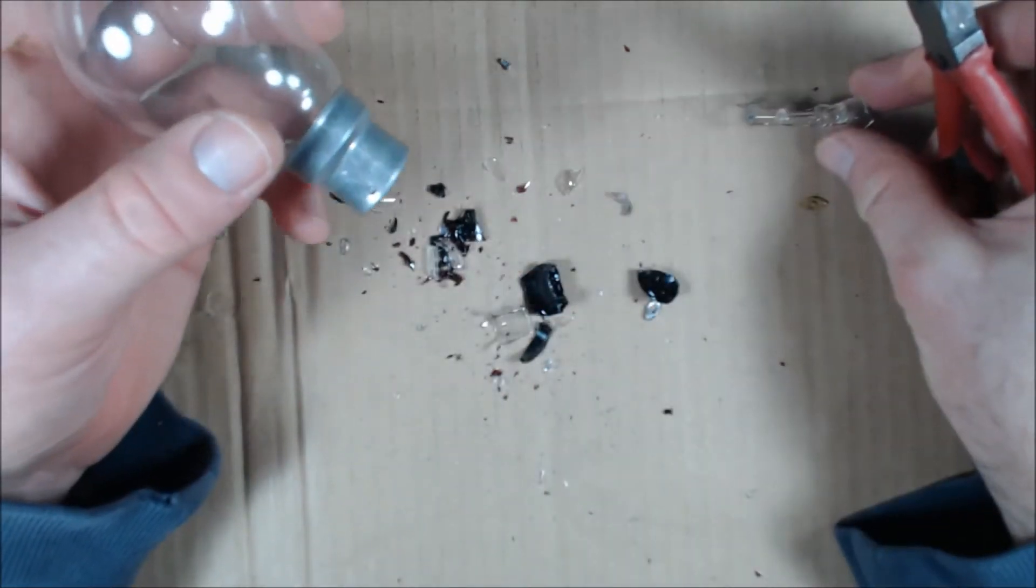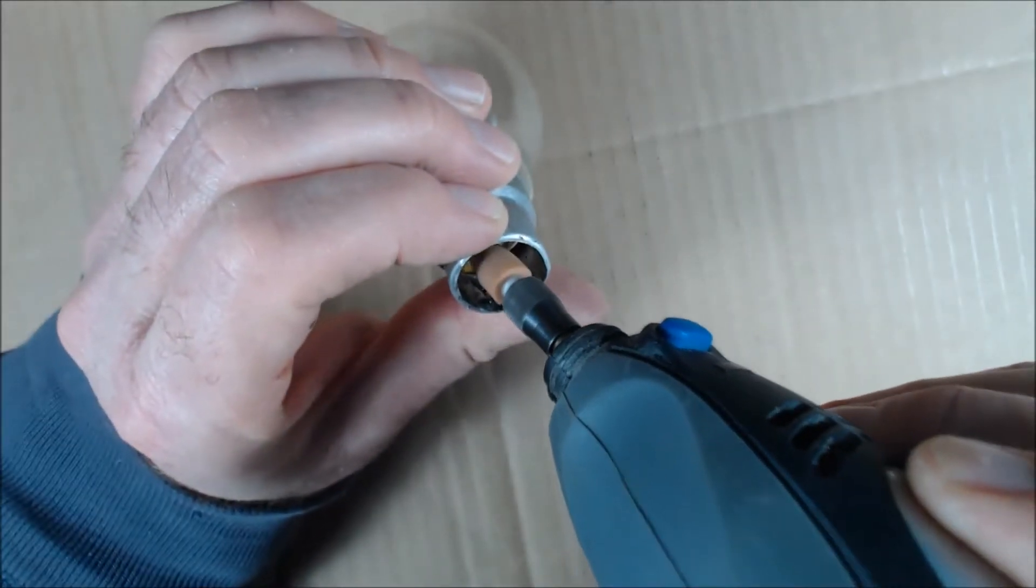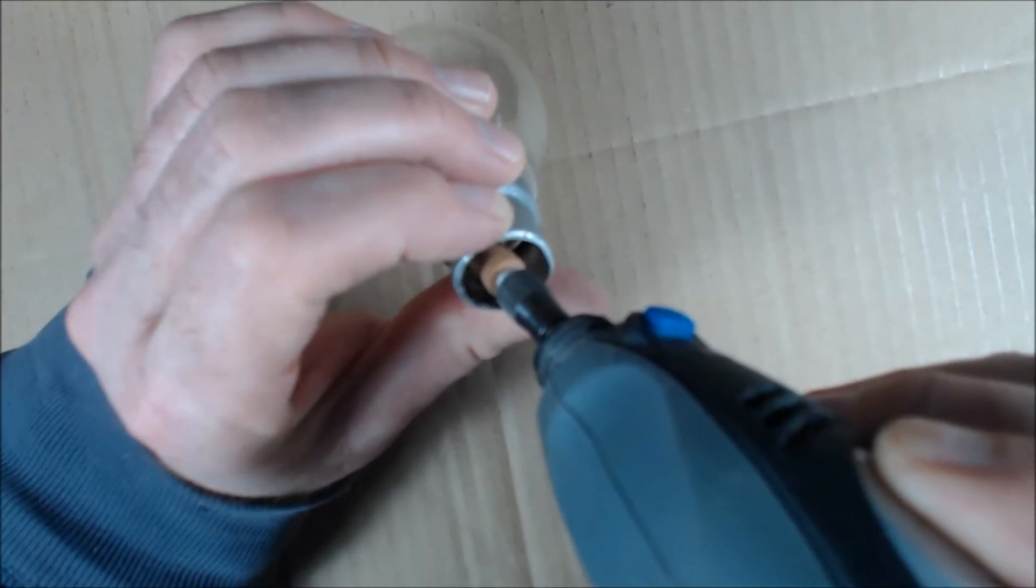At this point we're left with an empty bulb but it does have some sharp edges inside. So I used a grindstone in the dremel to very carefully grind away all of the sharp edges.